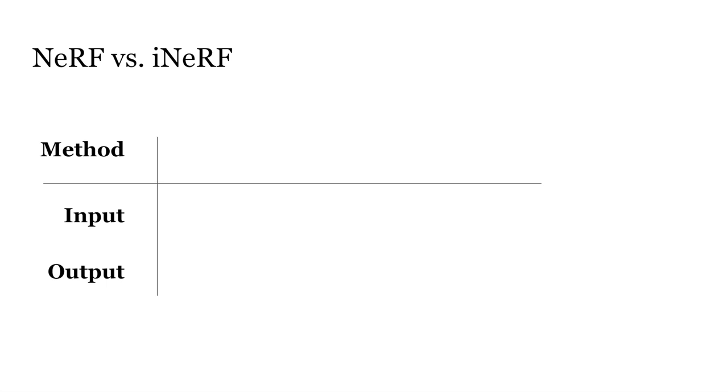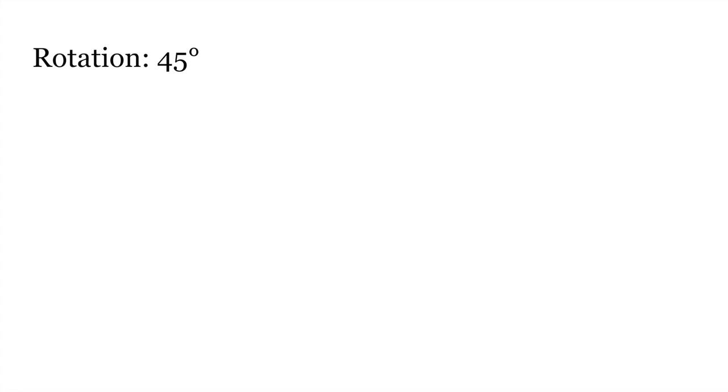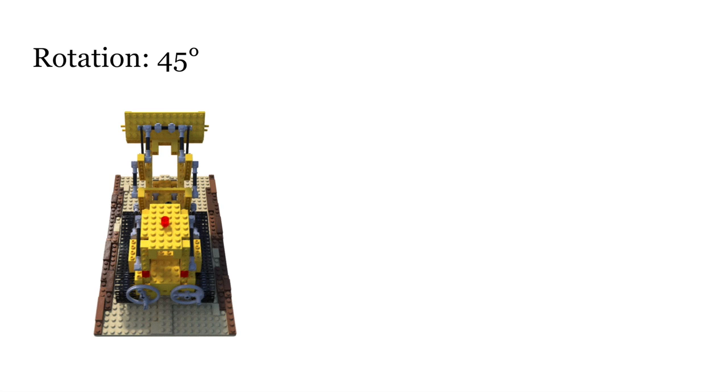To better compare NeRF and iNeRF, we note that NeRF takes as input the camera pose and outputs an image, while iNeRF takes an image as the input and estimates its camera pose. Here, we show iNeRF in action. It is used to reduce the rotation error from 45 degrees to almost zero.